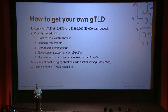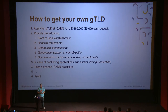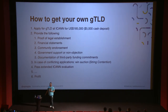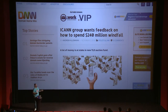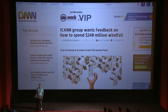Then you pass the extended ICANN evaluation, manage and operate your own registry infrastructure — including authoritative name service, WHOIS, and a registry service — and profit. This is not practical unless you're super rich. But all this money from auctions and applications for new GTLDs creates a weird problem. ICANN is a non-profit, and they actually want help deciding where to spend the money — this was a real headline from October 9th this year.